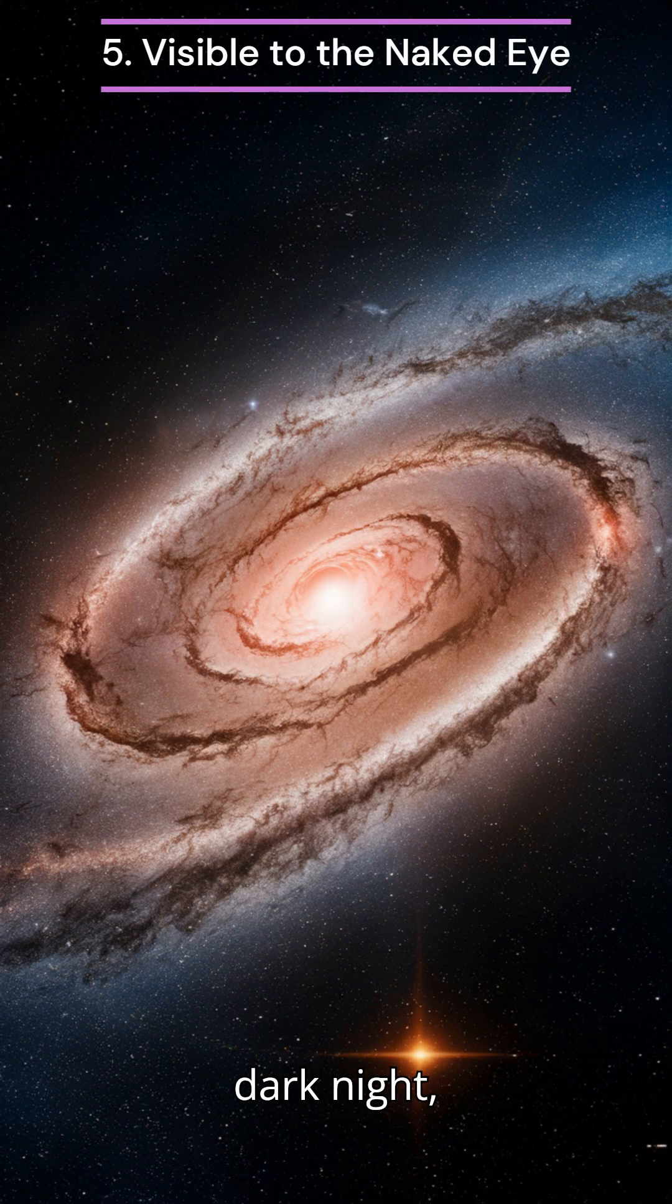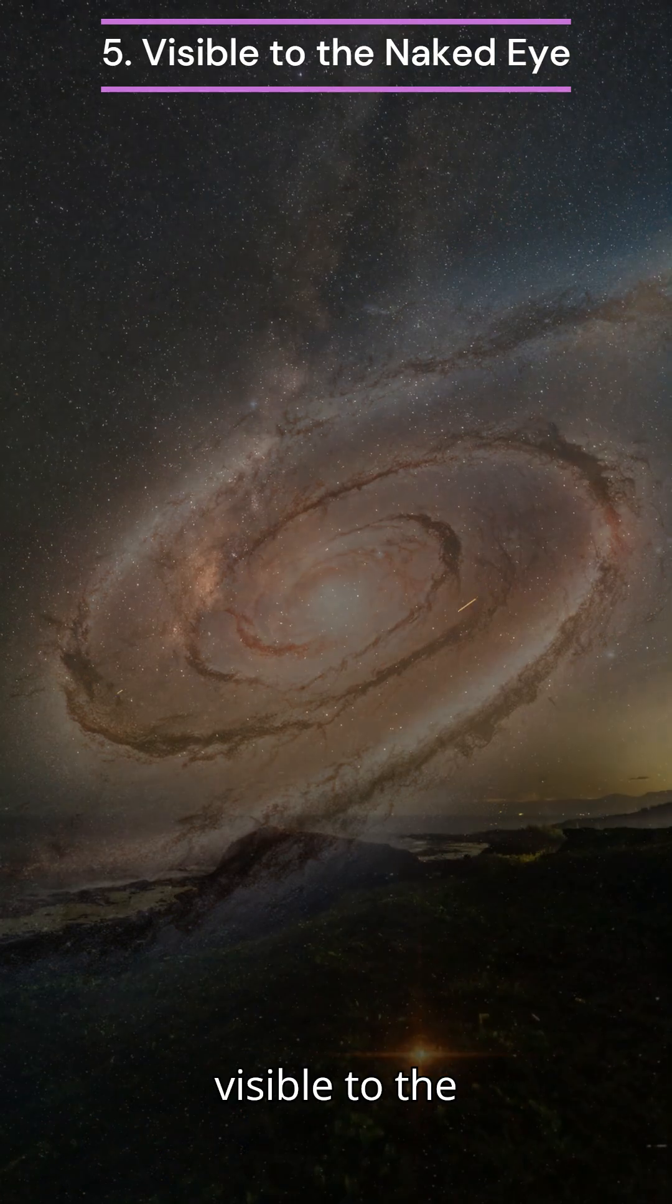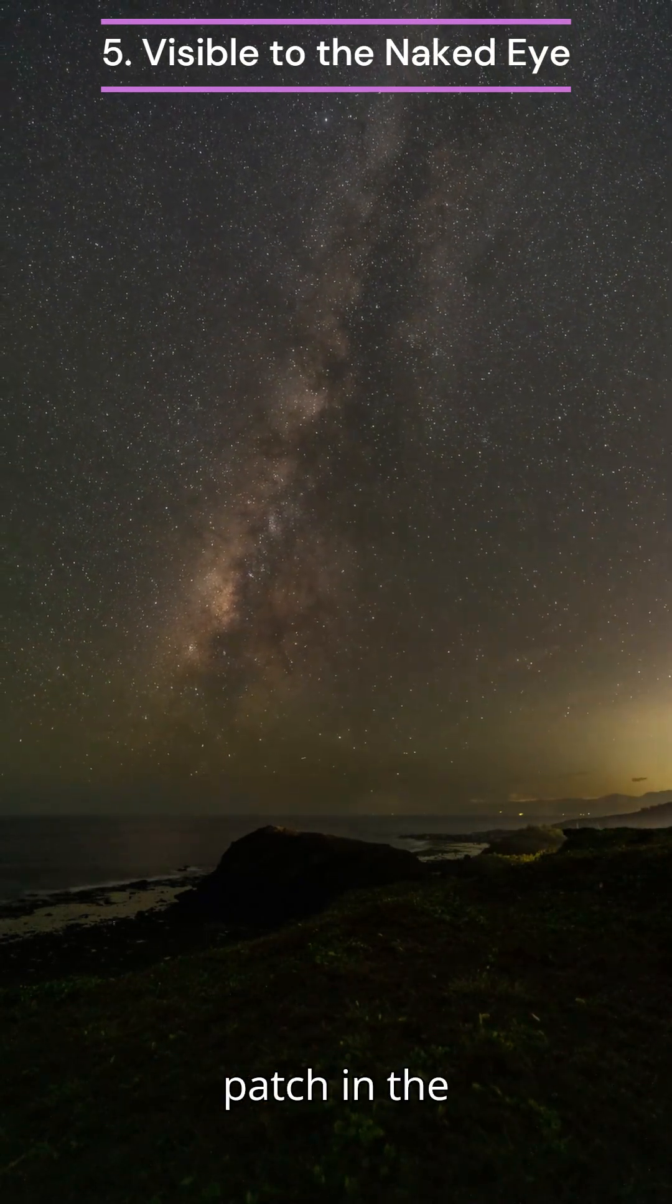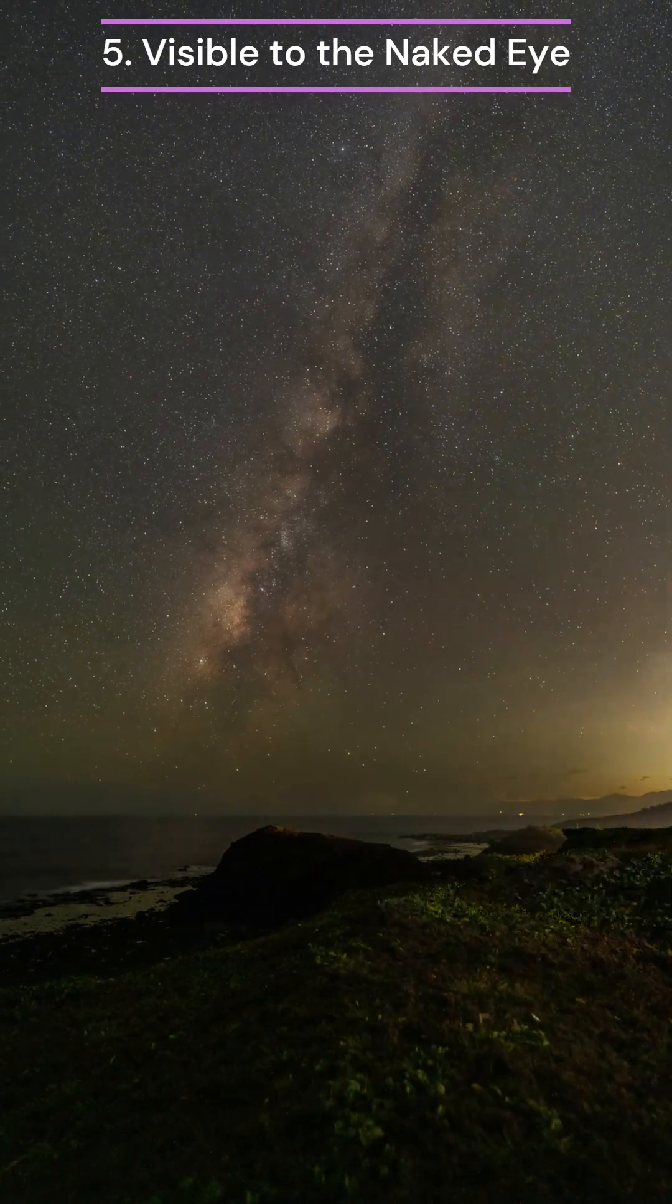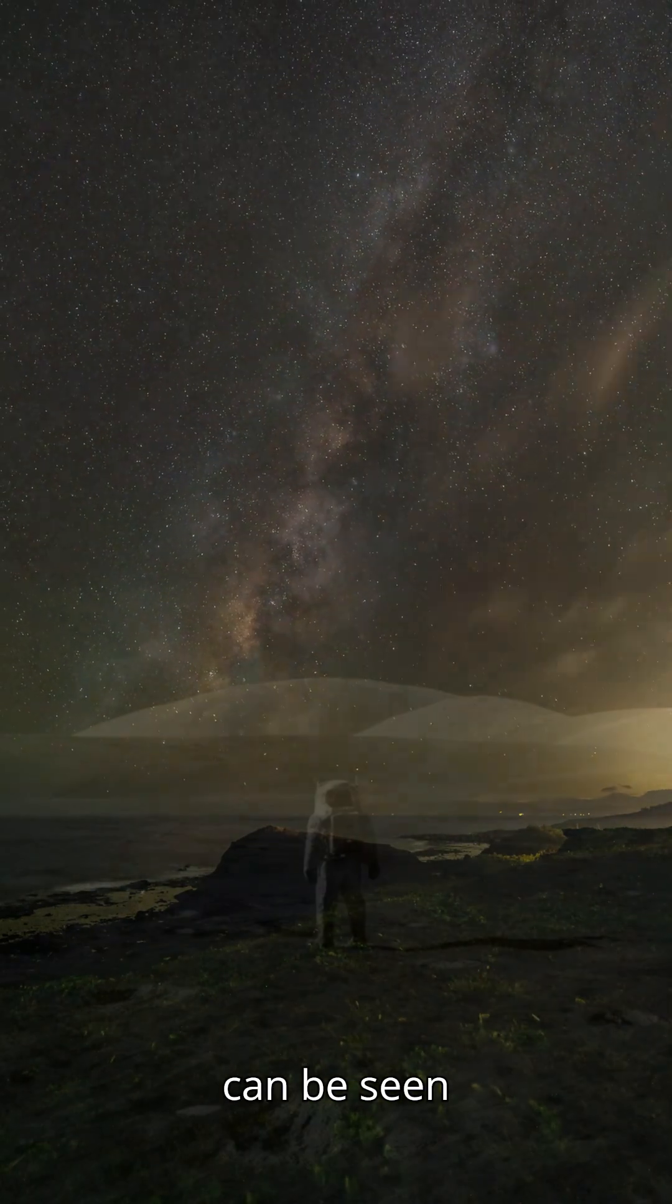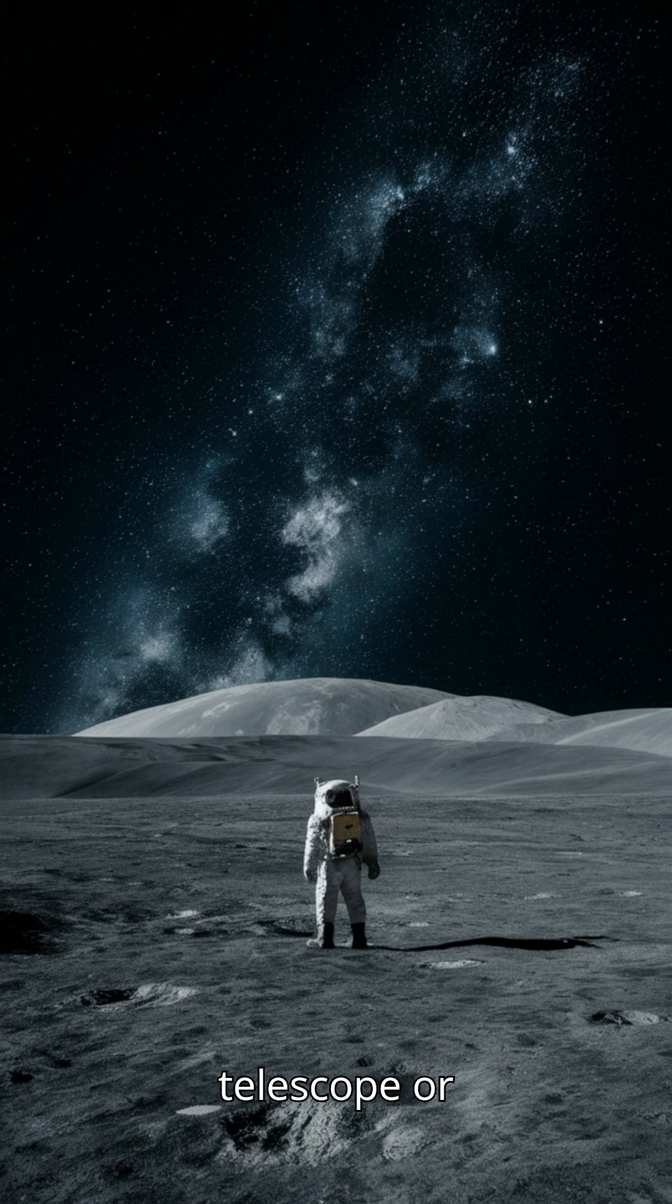On a clear, dark night, the Andromeda Galaxy is visible to the naked eye as a faint, fuzzy patch in the constellation Andromeda. It's one of the few galaxies that can be seen without the aid of a telescope or binoculars.